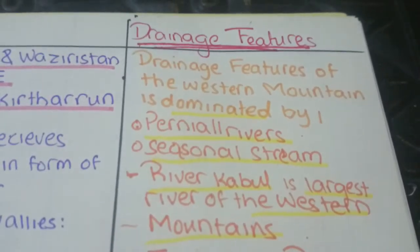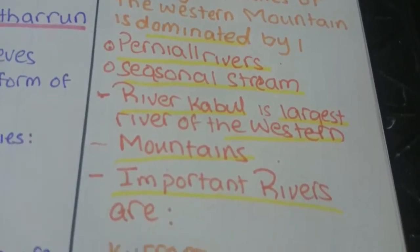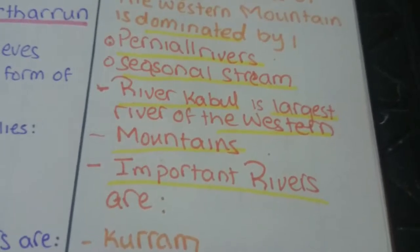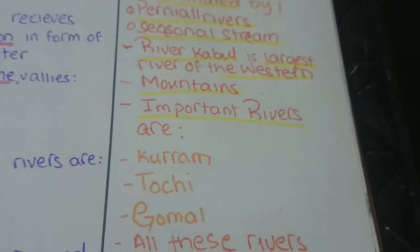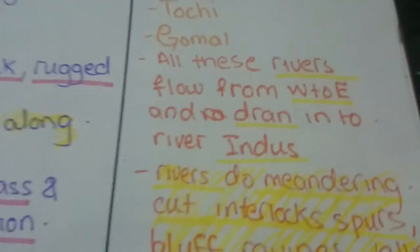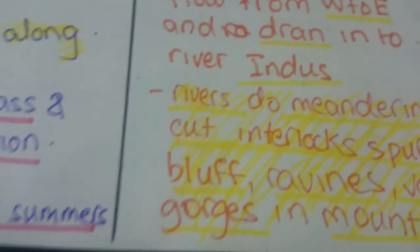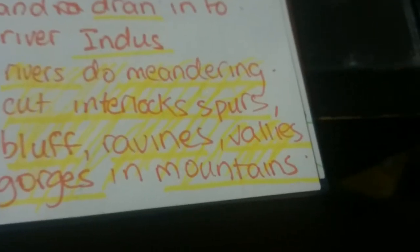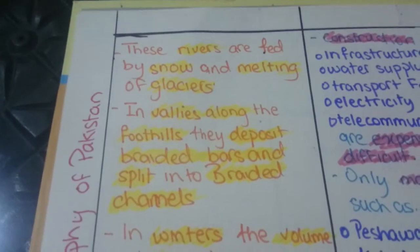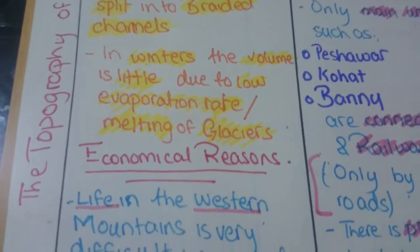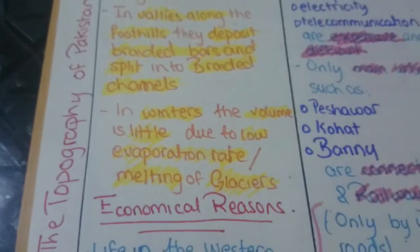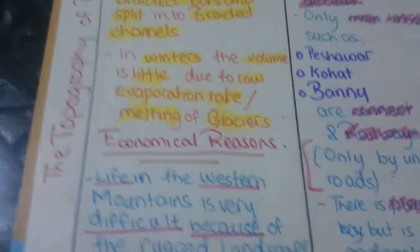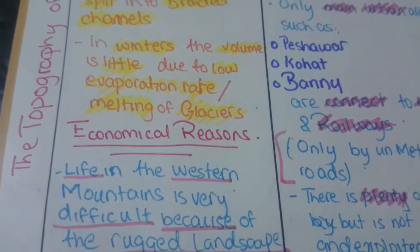Drainage features of the Western Mountains are dominated by perennial rivers and seasonal streams. River Kabul is the largest river here. Important rivers are Kuram, Tochi, and Gomal. All these rivers flow from west to east and drain into the Indus. Rivers do meandering, cut interlocking spurs, bluffs, ravines, valleys, and gorges in the mountains. These rivers are fed by snow and melting glaciers; in valleys along the foothills they deposit braided bars and split into braided channels. In winter, the volume of drainage is very low due to high evaporation rate and no melting of glaciers.